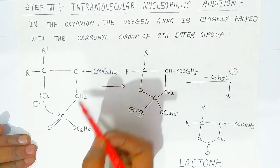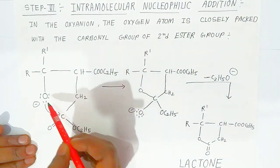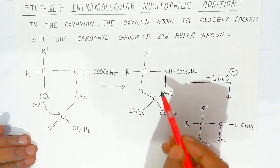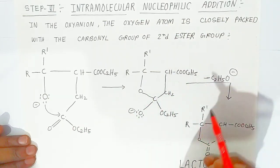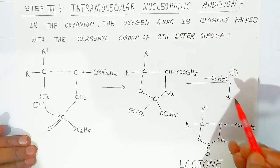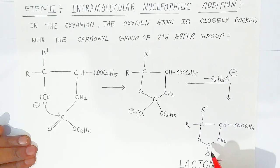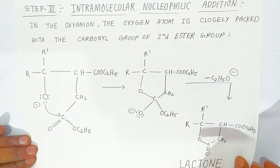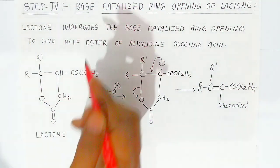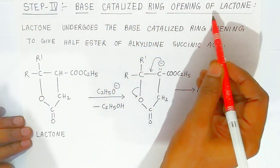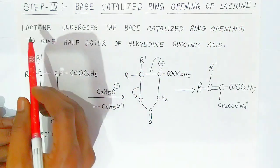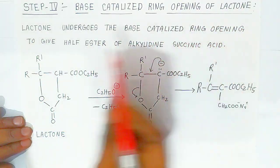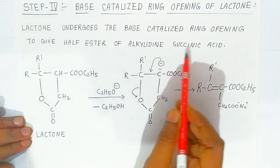Once the oxyanion is formed, in the third step there is intramolecular nucleophilic addition. The oxygen atom, closely packed with the carbonyl group of the second ester group, undergoes intramolecular nucleophilic addition to form a cyclic compound. In presence of base, it forms a lactone, and the carbonyl group reappears in the structure.